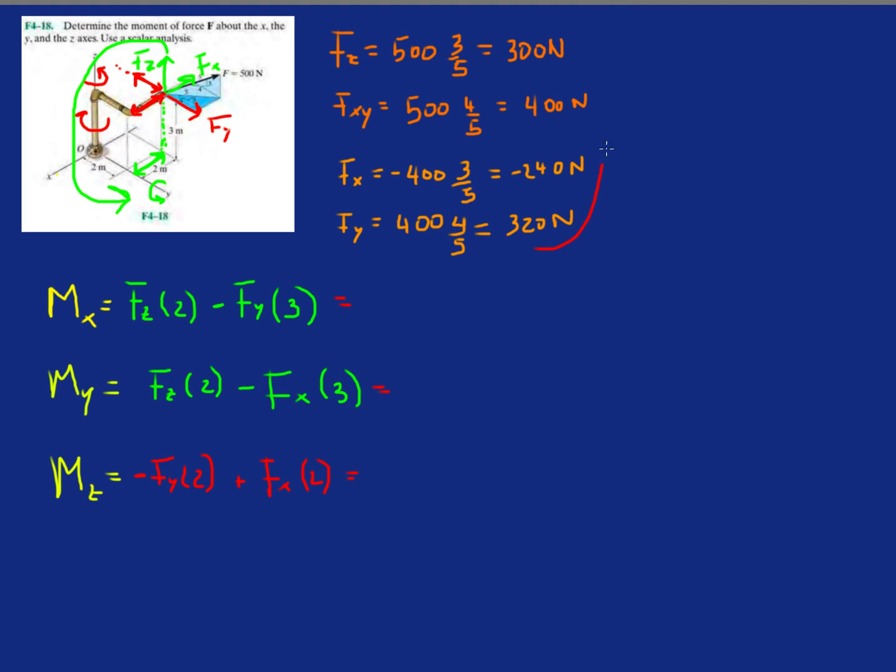Now let's see what this gives us. And remember, we have all the forces here. So let's do it with z first. Sorry, MX. 300 times 2 minus FY times 3. So I got minus 360 newton meters for MX.